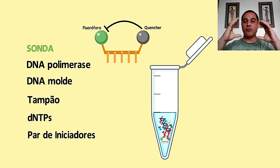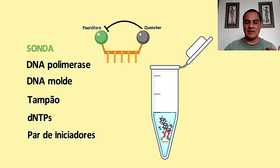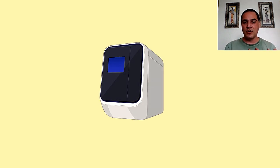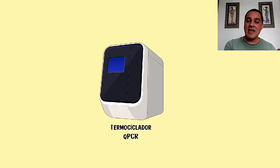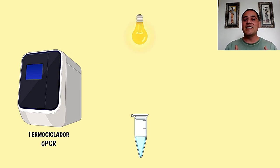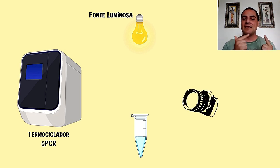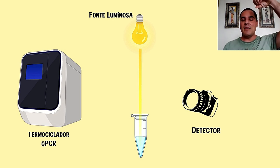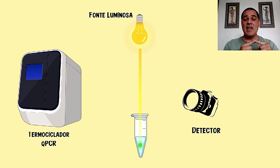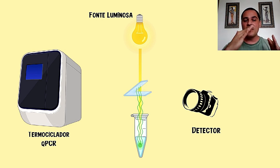O quencher é uma molécula que vai sugar a fluorescência da sonda. Então, a sonda, enquanto ela estiver em solução, ela não vai ser fluorescente — ela só vai florescer no decorrer da técnica. O termociclador é muito parecido com o da PCR clássica. A diferença é que ele tem um sistema de excitação do fluoróforo e também um sistema de detecção da fluorescência emitida. Como vocês podem ver nessa figurinha, tem uma fonte luminosa que vai emitir uma luz que vai excitar o fluoróforo que está lá no tubinho de PCR.